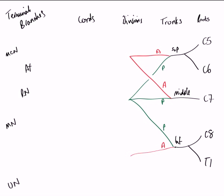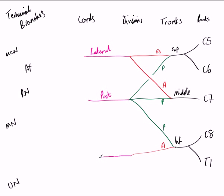From these divisions we then have the cords. The cords of the brachial plexus are a direct continuation from the divisions. The two anterior divisions from the superior and middle trunk give rise to the lateral cord. The three posterior divisions give rise to the posterior cord, and the single anterior division from the inferior trunk gives rise to the medial cord. It is these three cords that then go on to create the terminal branches.